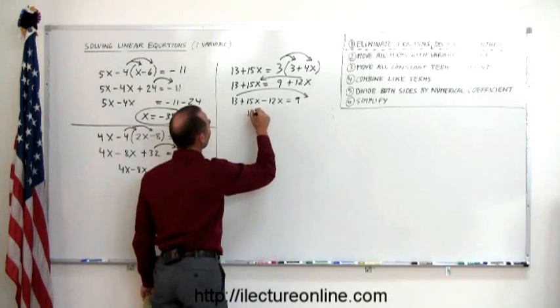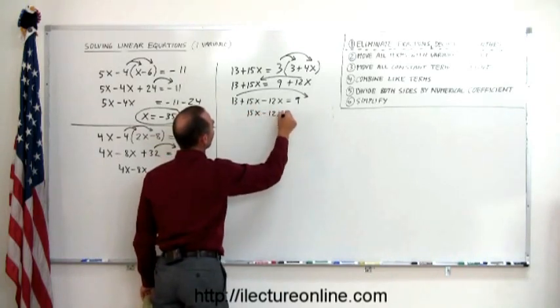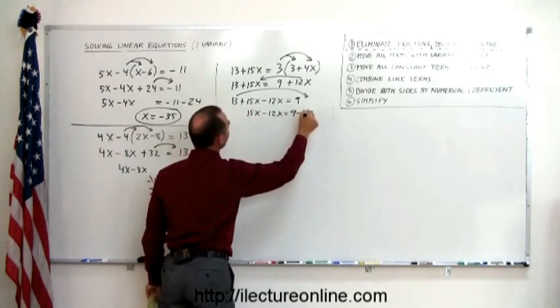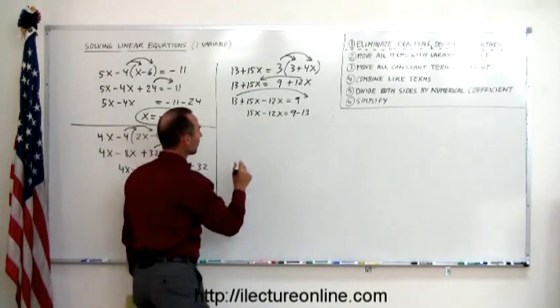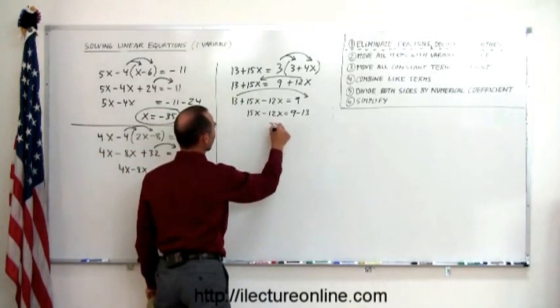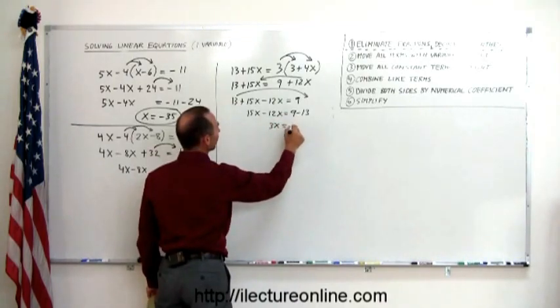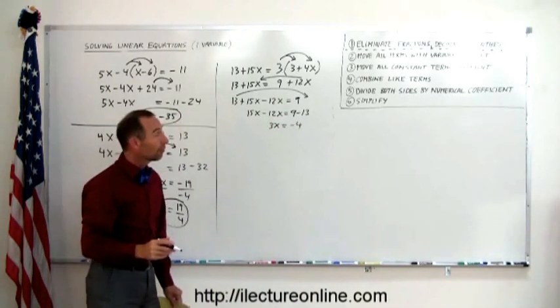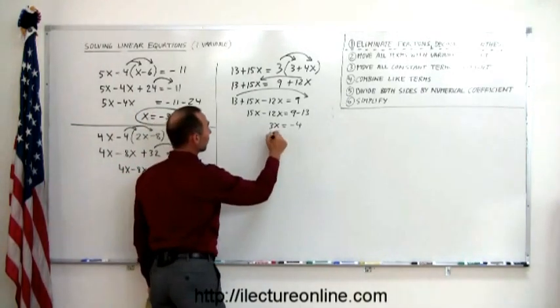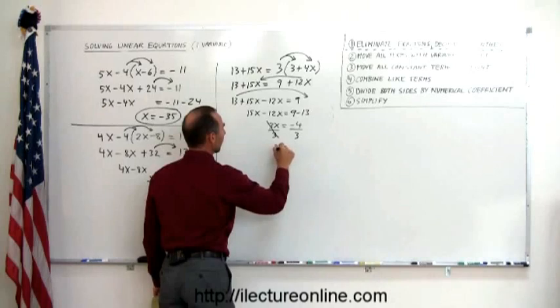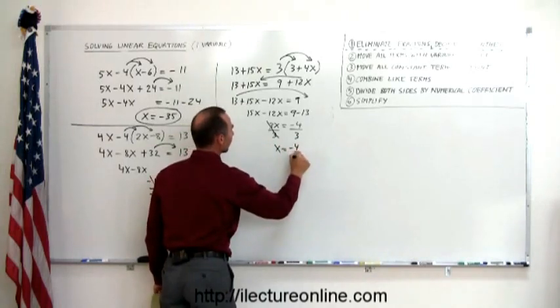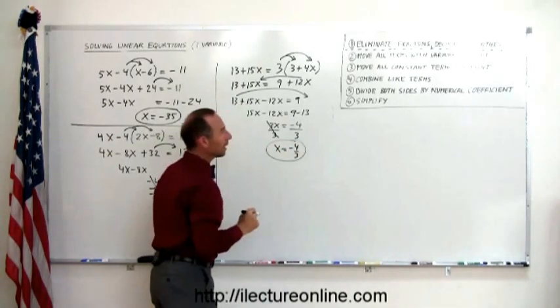Then I combine all like terms. Step number 4, 15 minus 12 is 3x. 9 minus 13 is minus 4. Next step, divide both sides by the number in front of the variable, the numerical coefficient. Cancels out. x equals minus 4 thirds.